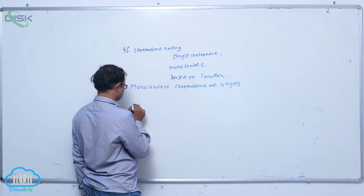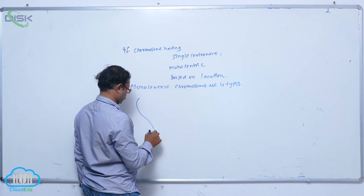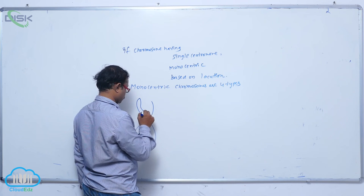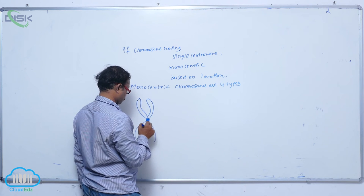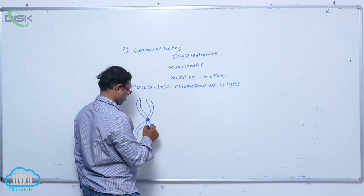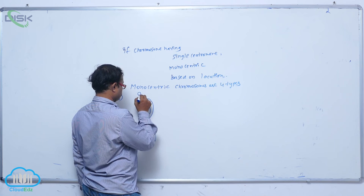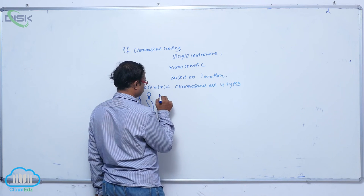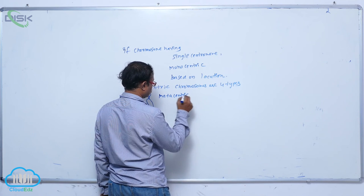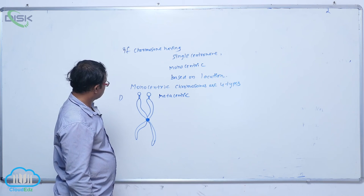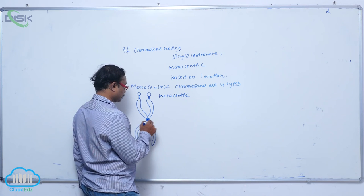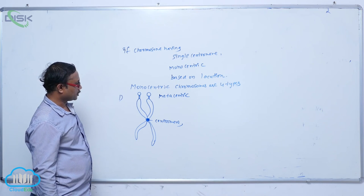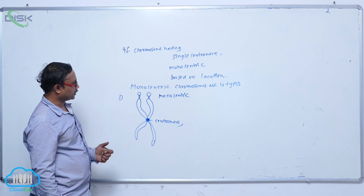The first type is the metacentric chromosome. In a metacentric chromosome, the centromere is present exactly at the center, so the arms appear in a V-shape. This is known as the metacentric chromosome.